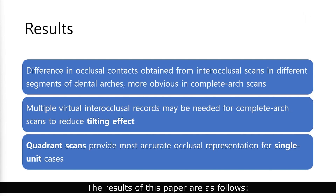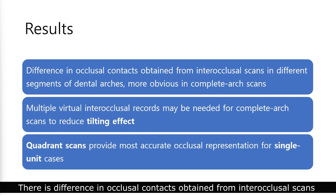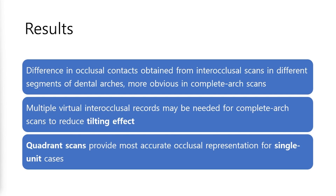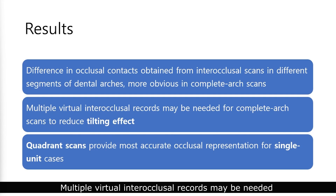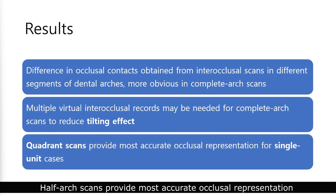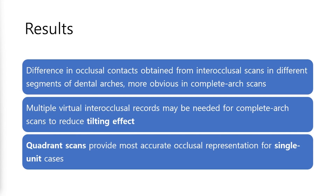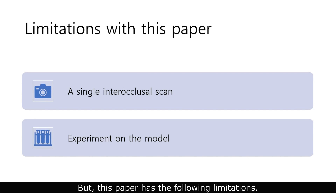The results of this paper are as follows. There is a difference in occlusal contacts obtained from inter-occlusal scans in different segments of dental arches, more obvious in full-arch scans. Multiple virtual inter-occlusal records may be needed for full-arch scans to reduce the tilting effect. Half-arch scans provide the most accurate occlusal representation for single unit cases.